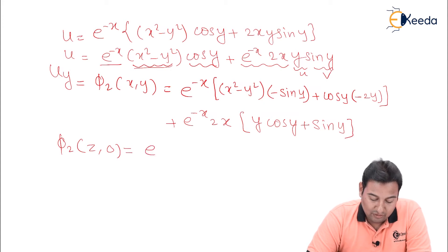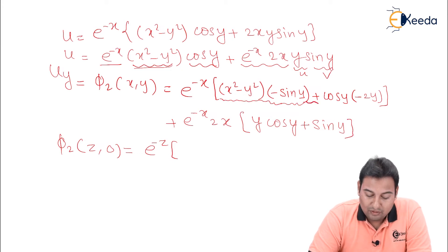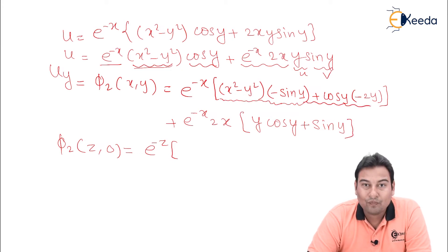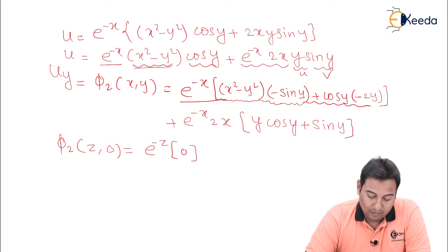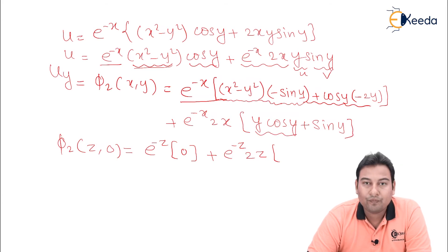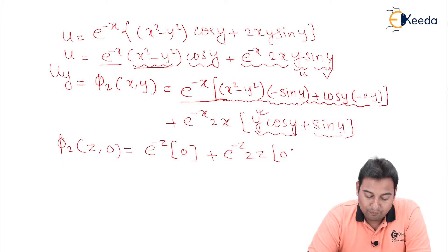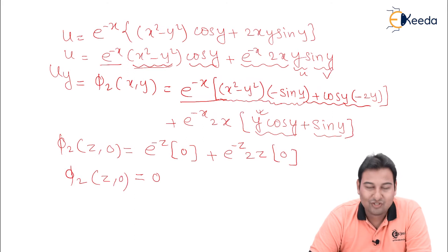Substituting y = 0 into φ₂: sin 0 equals 0, so the entire first portion of the expression is 0. The term with y is also 0, making that entire part 0. Putting y = 0, we get e raised to minus z times 2z times 0, which is 0, and the remaining terms are also 0. So φ₂(z, 0) equals 0 entirely.